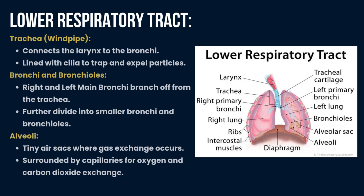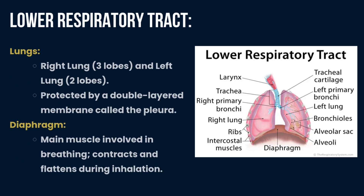The third part is the alveoli. Fourth is the lungs — the right lung has three lobes and the left lung has two lobes, an important point to remember. They are protected by a double-layered membrane called the pleura. The final part is the diaphragm, the main muscle involved in breathing, which contracts and flattens during inhalation.